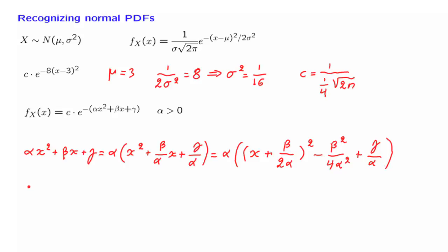Therefore, the PDF of x is of the form. We have a certain constant from here. Then we have the negative exponential of this term, e to the minus alpha, x plus beta over 2 alpha squared.